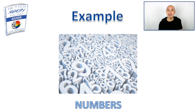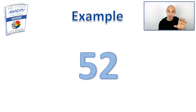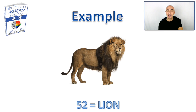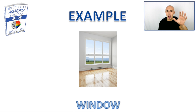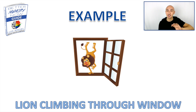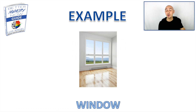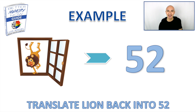For a quick recap, let's go into an example. I would use the number 52 and picture a lion for that number based off of the major system. You bring up a memory map and choose a location — maybe your window as your first location. Picture the lion doing something funny, like climbing through the window. To recall it, look back at that window, see the lion, and turn that back into the number 52.